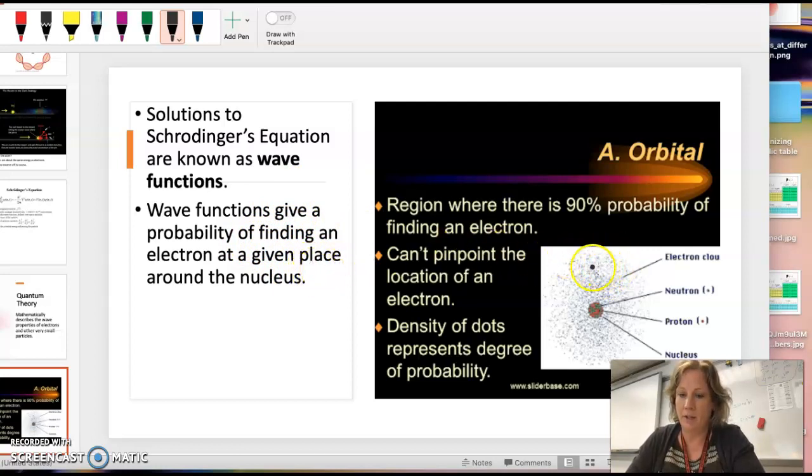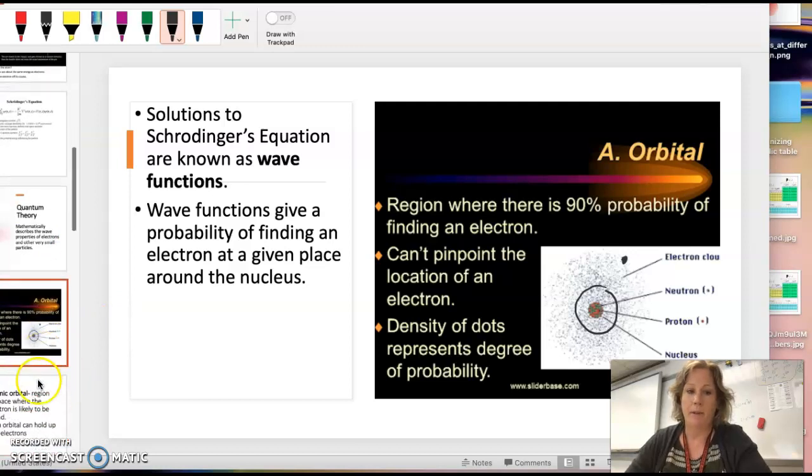In this picture, you can see the nucleus is in the middle. Where it's denser, more dots, the dots would be the location of an electron at any given point. It's trying to show you that you're more likely to find the electron kind of close in here, but it is also possible it's way out there. You can't know exactly where they're at. It's based on probability.